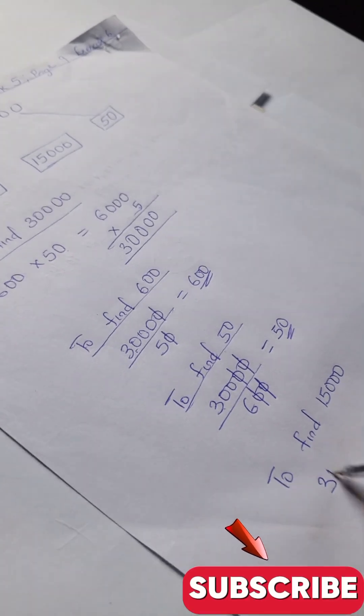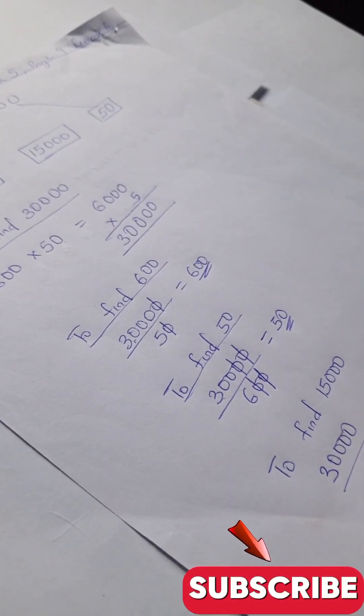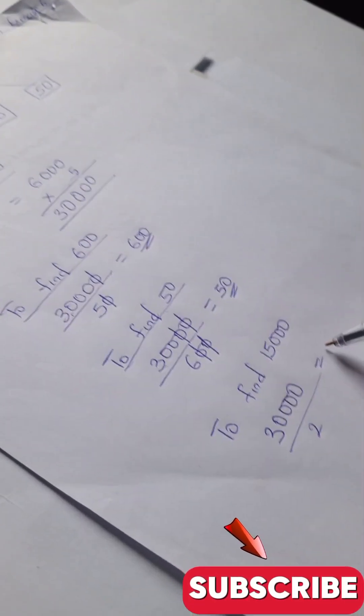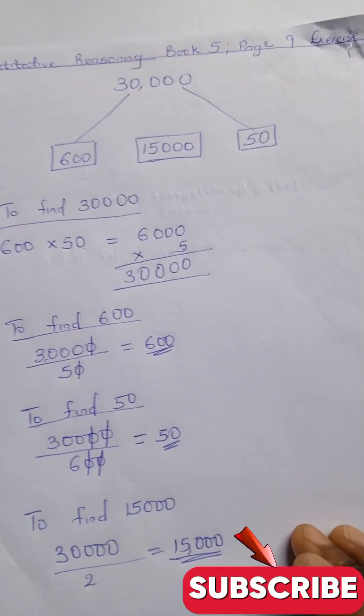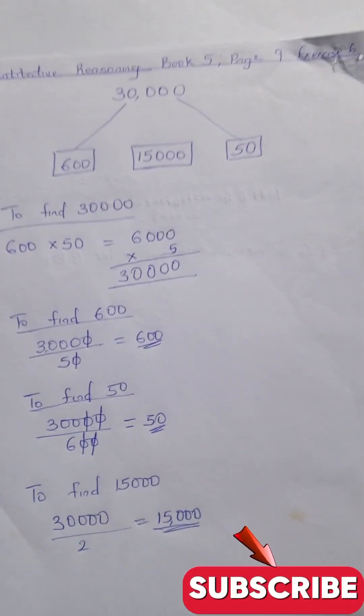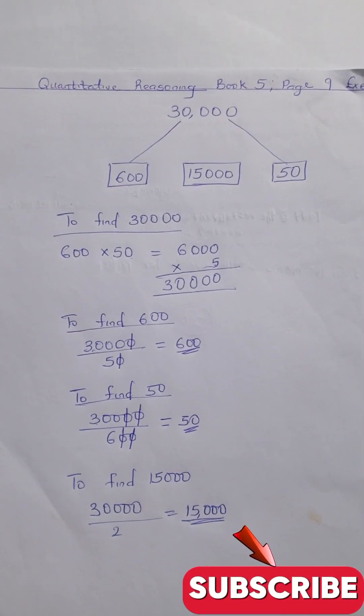And to find 15,000, simply divide 30,000 by 2. When you do that, you have 15,000. Don't forget to subscribe and like this channel for more quantitative reasoning solutions and mathematics problems. Bye!